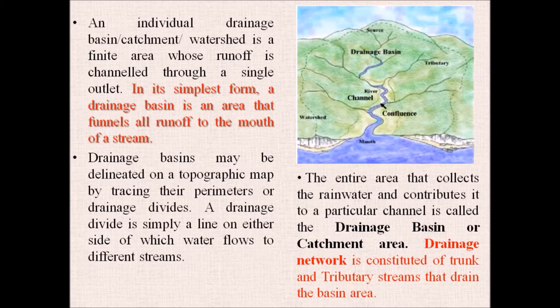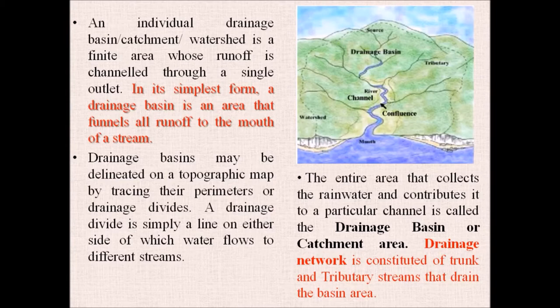An individual drainage basin or a watershed is a finite area whose runoff is channeled through a single outlet. If you look into this figure, you can see that this dotted line marks the boundary of the drainage basin, which you can call the catchment area or the watershed. In its simplest form, a drainage basin is an area that funnels all runoff to the mouth of the stream, meaning whatever precipitation there is in this entire area will drain and come out at that point.